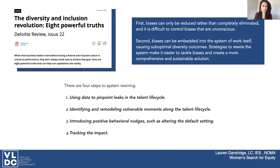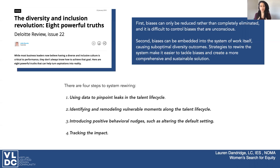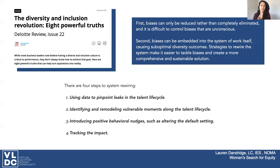First thing we want to do is have metrics. So we need to start pinpointing information about the talent — looking at how employees are recruited all the way through when they retire. We want to identify and remodel any vulnerable moments that talent had within their stint at the company. Where were they susceptible to someone's personal decision process as opposed to a more equitable decision process? We want to introduce positive behavioral changes, and we really want to track the impact. Once you make these changes, make sure you have the metrics to show how and when you met certain goals and the effectiveness of the changes you made.